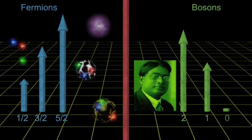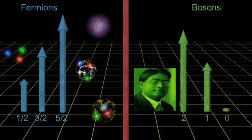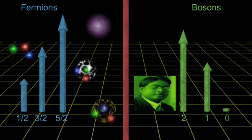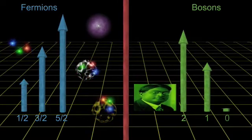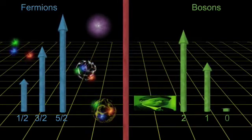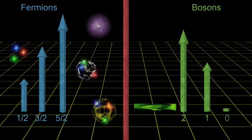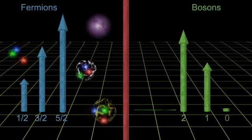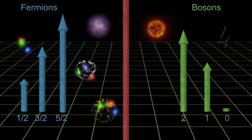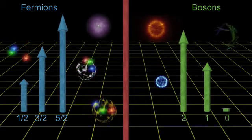Unlike fermions, which must obey the Pauli exclusion principle, bosons do not. Groups of multiple bosons will all gather in the lowest available energy state. Photons, gluons, gravitons all fall into this family.